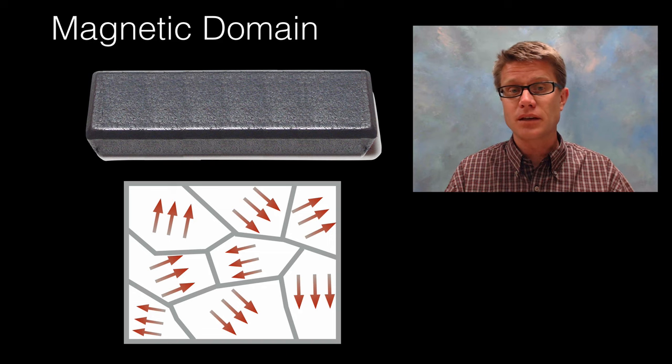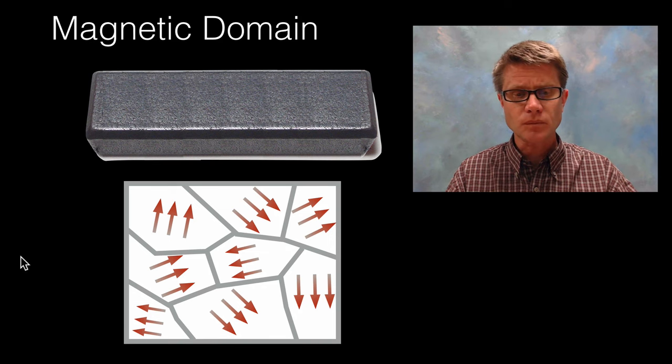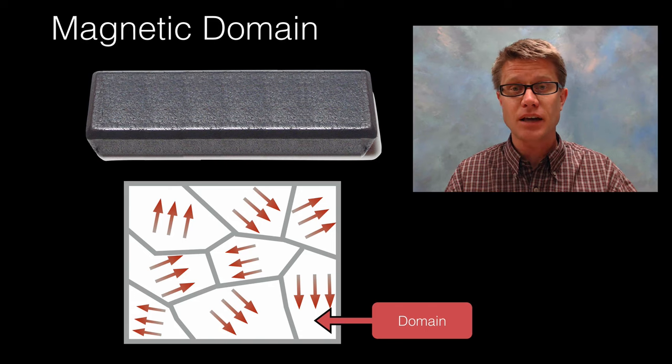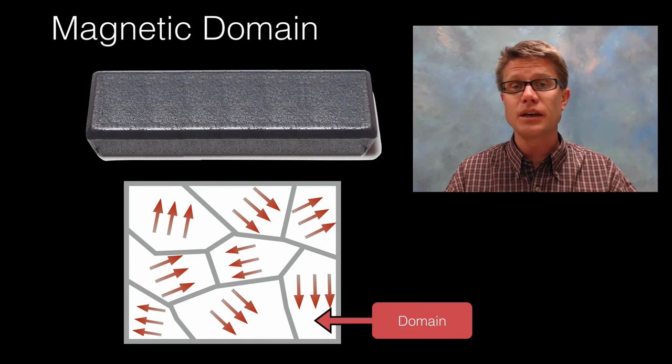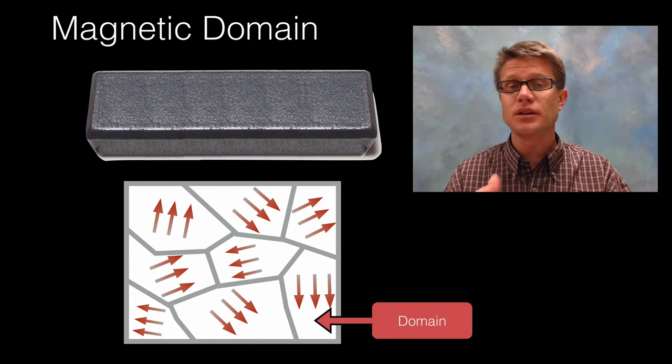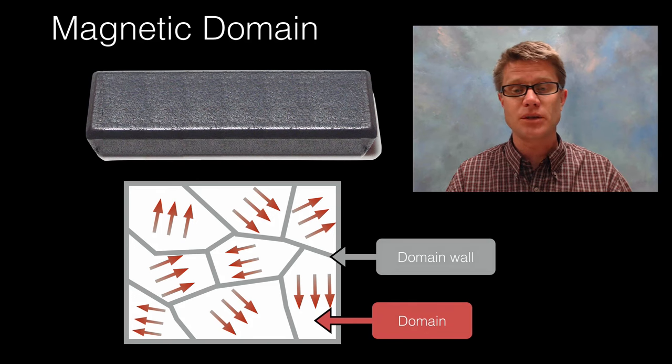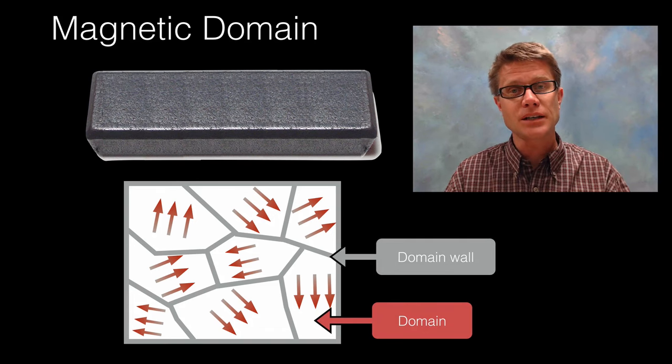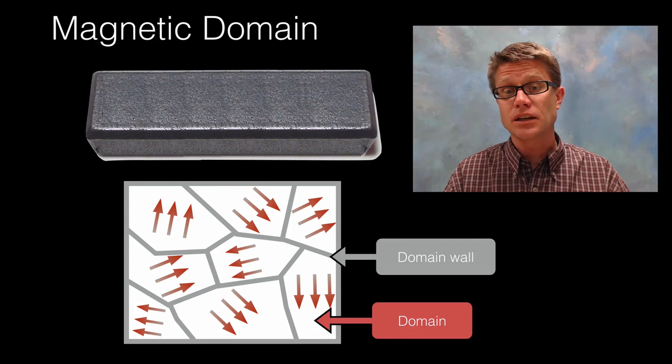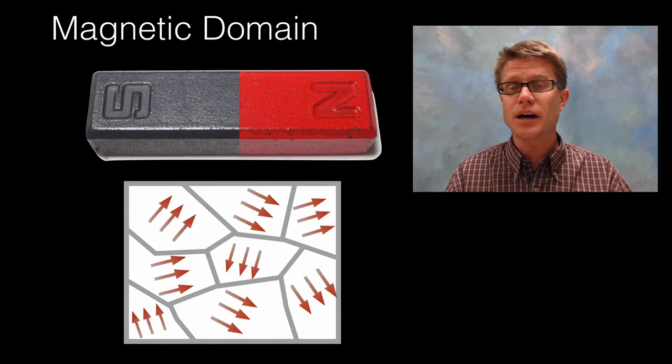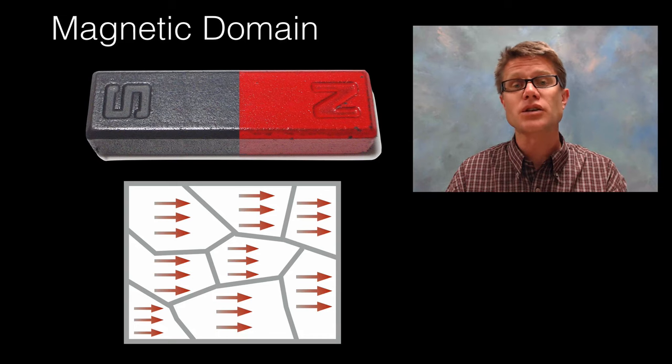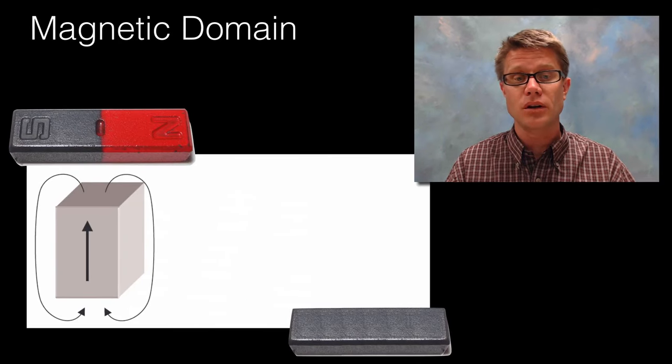You can think of it like this. In a block of iron we've got all of these domains which are tiny magnets inside it. But if the whole thing isn't magnetized they're going to be pointing in every which direction, separated by these domain walls. If you take something that's not magnetized and you magnetize it, what you're really doing is you're lining up all those magnetic domains. If they're all pointed in the same direction then you've magnetized that overall object.